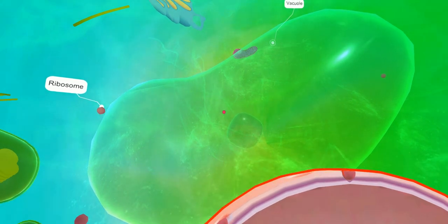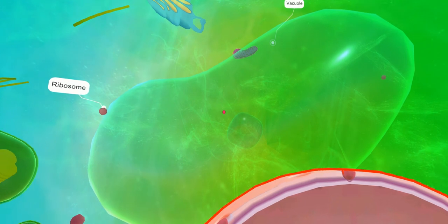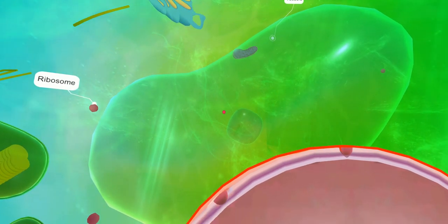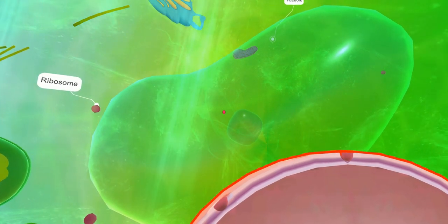Vacuoles might store food or any variety of nutrients a cell might need to survive. They can even store waste products so the rest of the cell is protected from contamination.